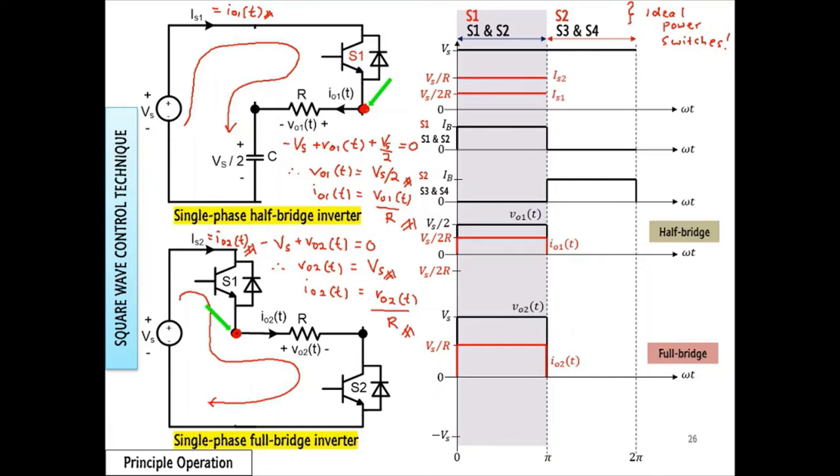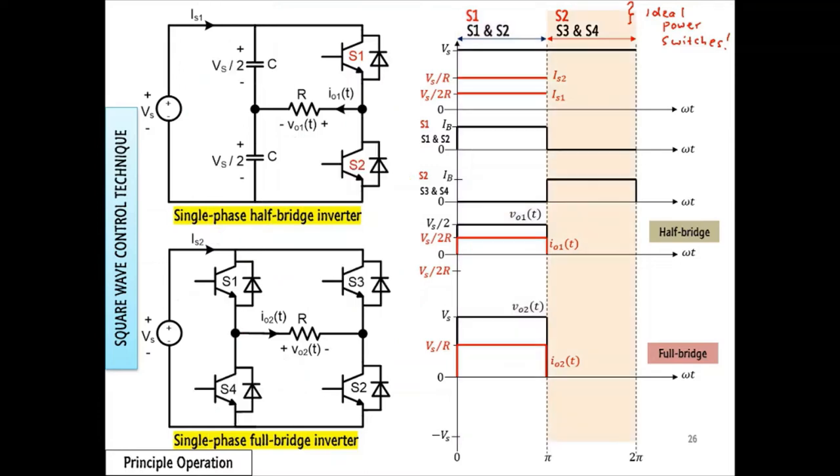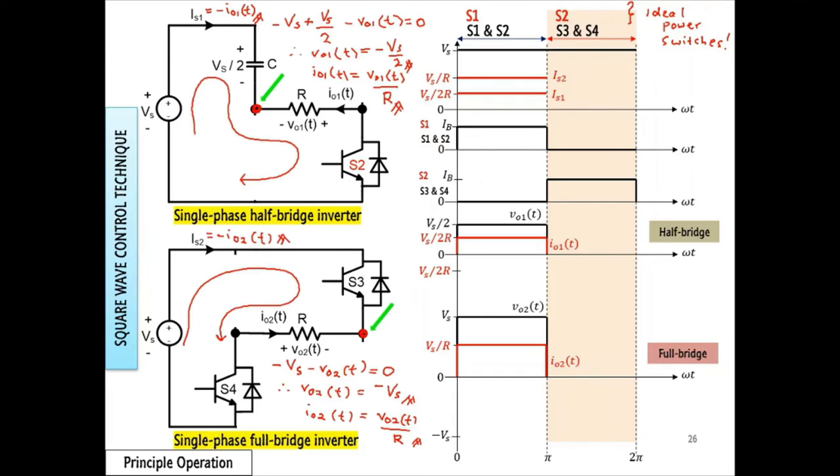Next, let's analyze the circuit when the second control signal is applied. By applying Kirchhoff's law and Ohm's law in the equivalent circuit, we can obtain these following equations. From the equations, the voltage and current waveforms can be sketched like this.